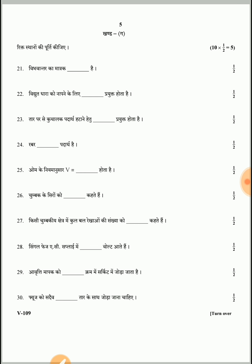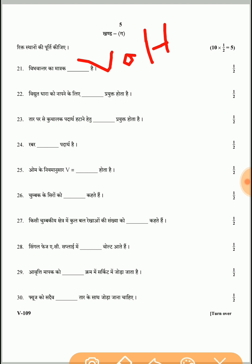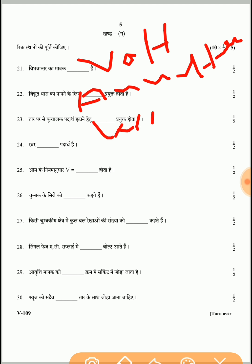Part 3, Question 21: The unit of voltage (विद्युत विभांतर) is Volt — correct answer. Question 22: The instrument used for measuring electric current is an Ammeter — correct answer. Question 23: A wire stripper is used to remove insulation from a wire — wire stripper is the correct answer. Question 24: Rubber is an insulator material — correct answer.